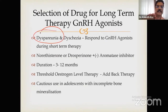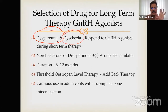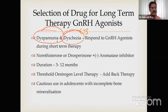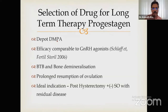GnRH agonists are particularly good for dyspareunia and dyschezia in the short term, but whenever you prescribe them, add-back therapy is mandatory. Duration of GnRH agonist treatment should be six to twelve months. Be very cautious about bone mineral density.